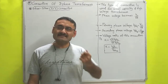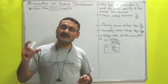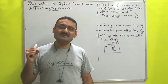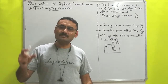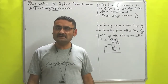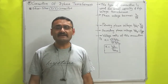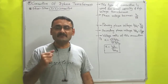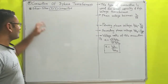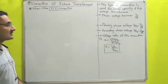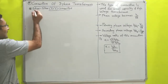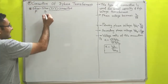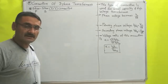In a single-phase transformer it has one primary winding and one secondary winding. Similarly, in the case of a three-phase transformer it also has one primary winding and one secondary winding. But whatever primary and secondary windings are there, they may be star connected or they may be delta connected. Star-star means that on the primary side it has a three-phase star connection, and on the secondary side it has again a three-phase star connection.